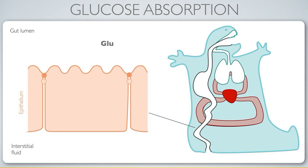One barrier for glucose transport is that quite often the concentration of glucose in the interior of a cell is higher than in the gut lumen, because those epithelial cells will use glucose as a source of energy.